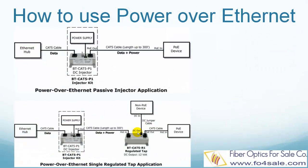This slide shows two typical configurations for Power over Ethernet application. Some network devices accept the injected DC power directly from the Cat5 cable through their RJ45 jack. These devices are called PoE compatible and are powered directly by the Power over Ethernet cable, as shown in the top picture.